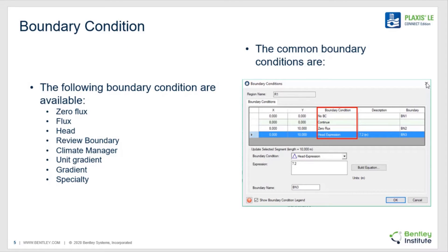In terms of which boundary conditions are available, we have specifically zero flux, flux, head, review boundary, a climate boundary, as well as a gradient boundary condition, as well as specialty boundary conditions which may be defined. Each of these may be specified in the boundary conditions dialog by right-clicking on the boundary.